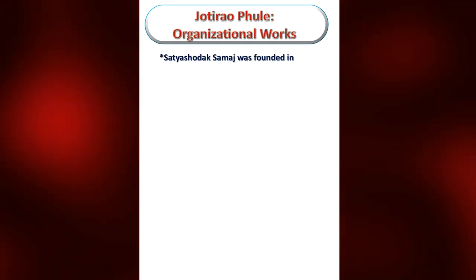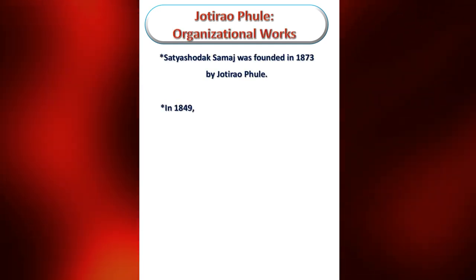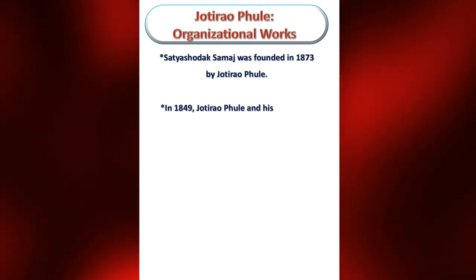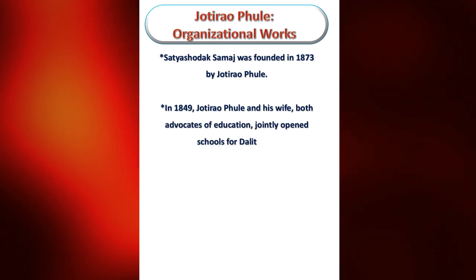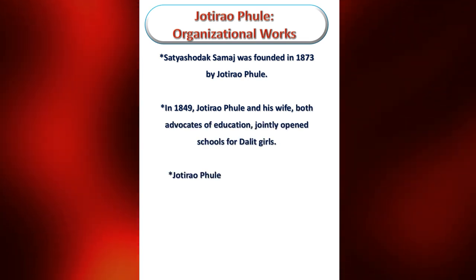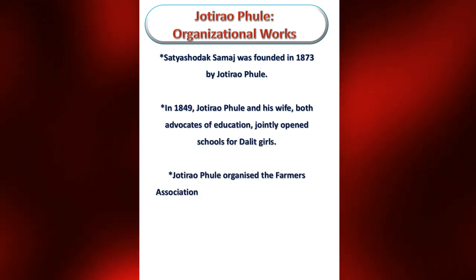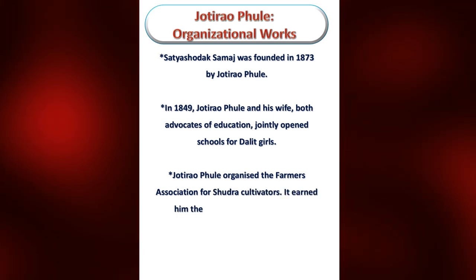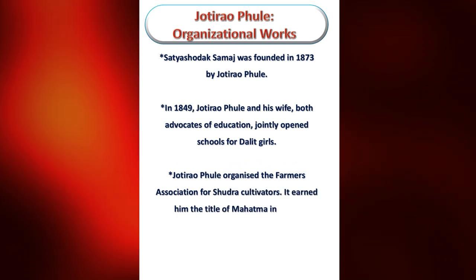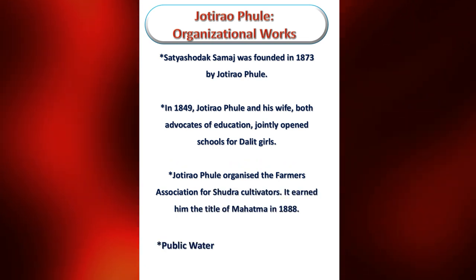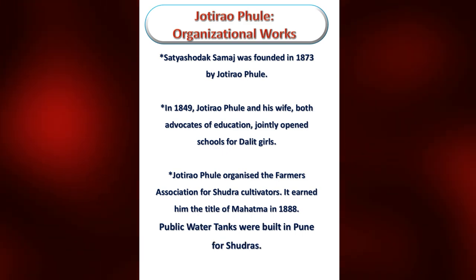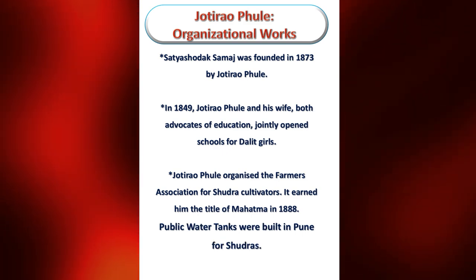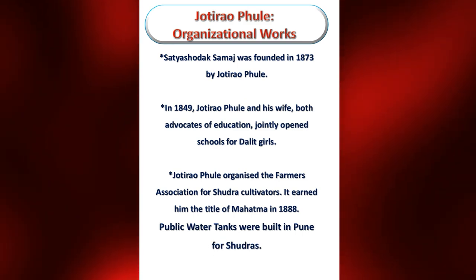Jyoti Rao Phule's organizational works include the founding of Satyashodak Samaj in 1873. In 1849, he and his wife, both advocates of education, jointly opened schools for Dalit girls. He also organized the Farmers Association for Shudra cultivators, which earned him the title of Mahatma in 1888. Public water tanks were built in Pune for Shudras.